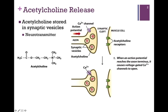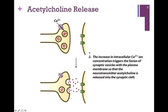When the action potential reaches the axon terminus, there is a depolarization and that opens voltage-gated calcium channels. As those channels open, calcium floods inside the cell and that triggers the fusion of the synaptic vesicles with the plasma membrane.